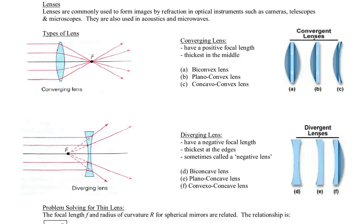In the previous chapter we learned about mirrors and how they form images through reflection. Now we're looking at lenses and how they form images through refraction, specifically spherical lenses, just like we looked at spherical mirrors.